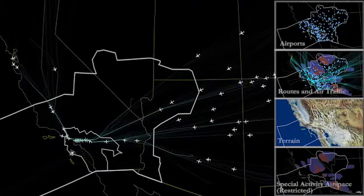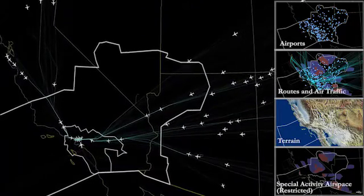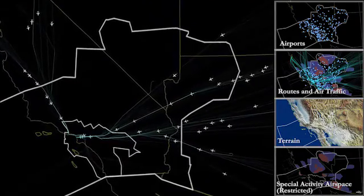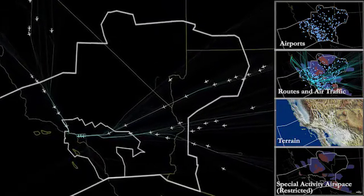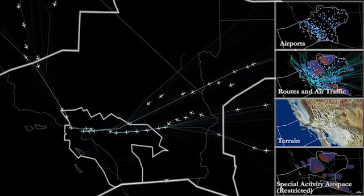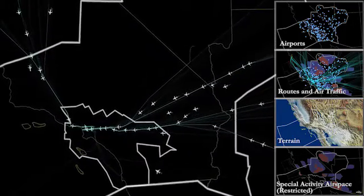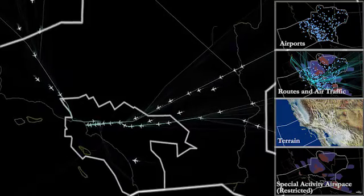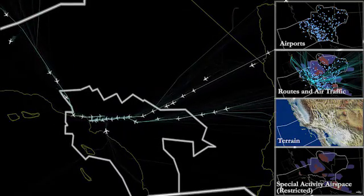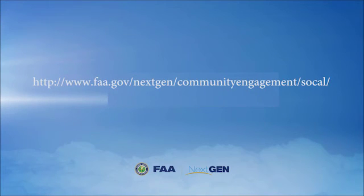Southern California has a large number of airports, routes that weave under, over, and around each other, high traffic volume, mountainous terrain, with blocks of military and special use airspace that's often unavailable for civilian use. All of these factors were taken into consideration with the new Metroplex routes. For more information and additional animations on the Southern California Metroplex, please visit our website.